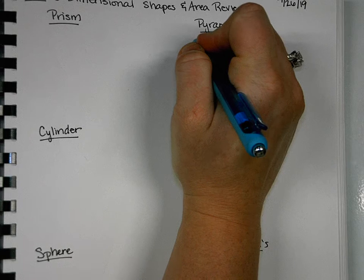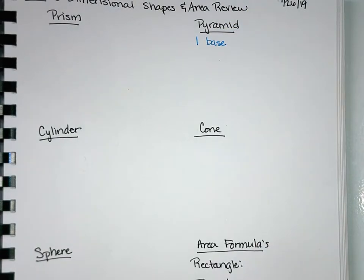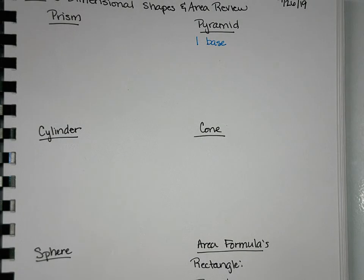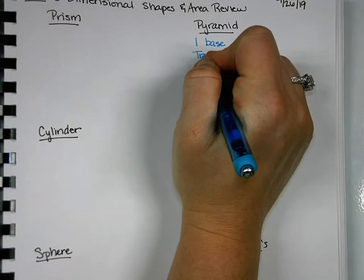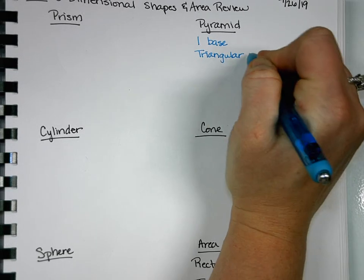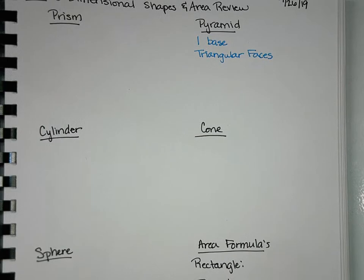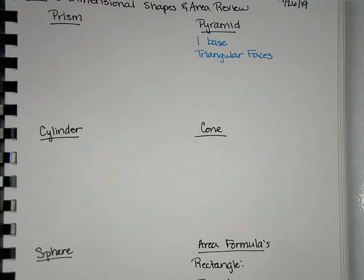The key to a pyramid is that it has one base, which in this case was a square, but it could be a triangular base or a trapezoidal base or a hexagon base as long as its base is a shape. The other thing is it has triangular faces. And faces are what we call these triangles that come up to the point. So a pyramid has one base and comes to a point.